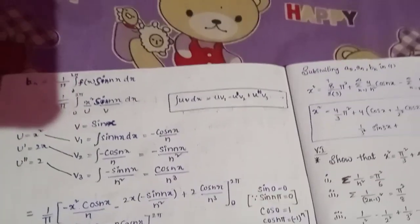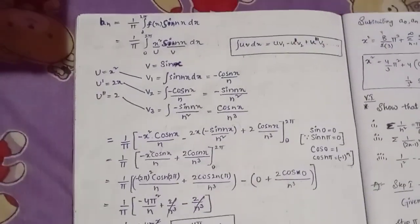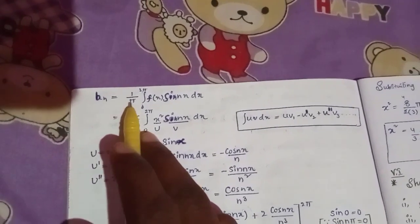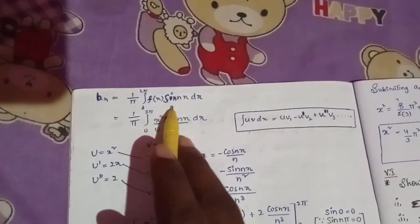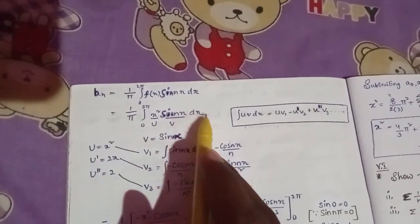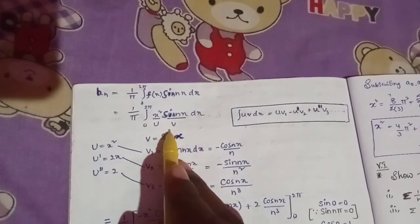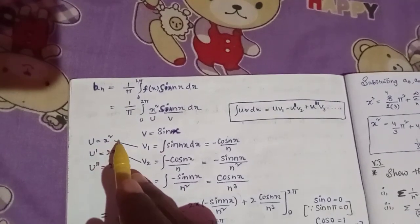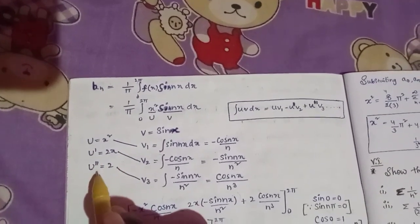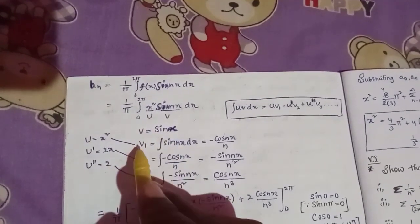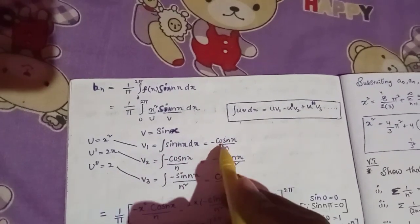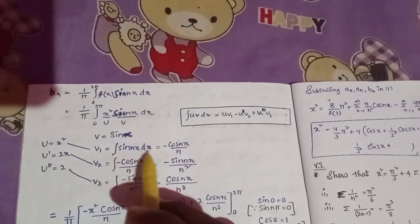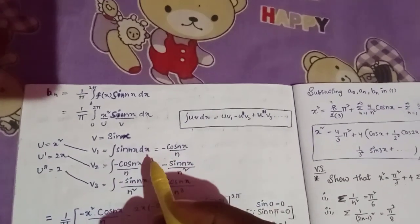So next, we have to find a_n and b_n. First, we find b_n. We use the UV method where u = x² and sin(nx) is v. So u = x², u' = 2x, u'' = 2. The integration of sin(nx) dx is equal to minus cos(nx) divided by n.